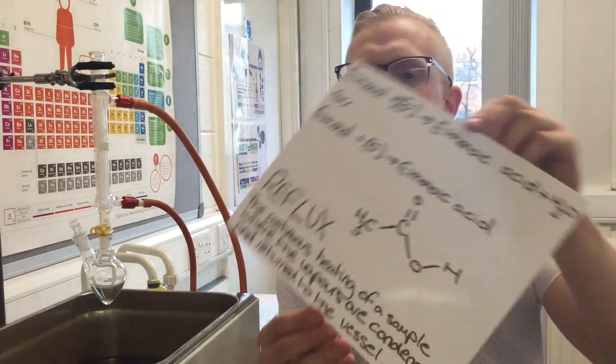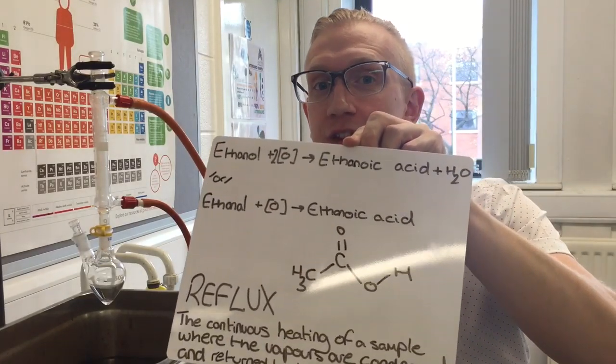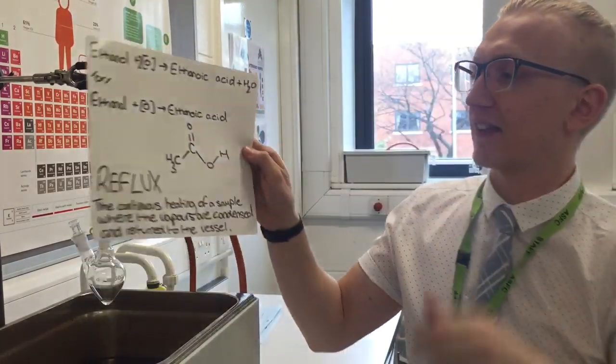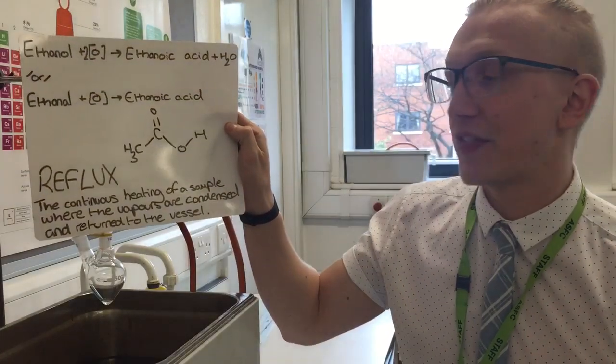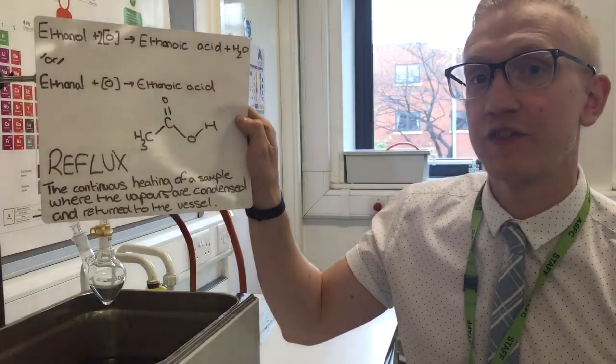For the alcohol, you need a lot more oxidising agent to make sure you go all the way to the end, and you'd probably need to leave it for longer to ensure the reaction has finished. It would still go orange to green, but some of it will do so because it's turned the primary alcohol into the carboxylic acid and some because it goes to the aldehyde first. The definition of a reflux is the continuous heating of a sample where the vapors are condensed and returned to the vessel.